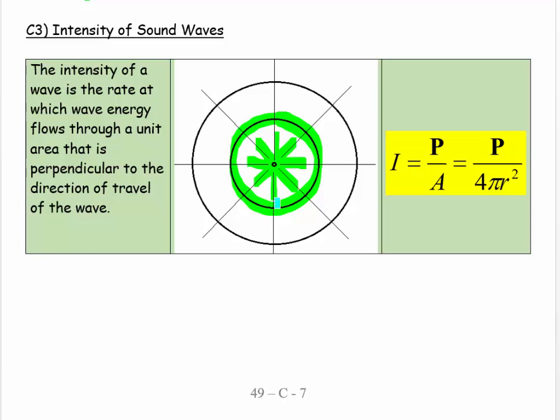This same amount of energy per second is spreading out over larger and larger spheres, and so there's less energy per square meter, less energy per second per square meter. If you imagine a little window on the edge of the sphere, less energy per second would come through it.